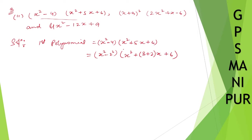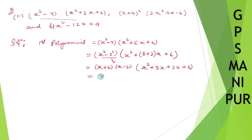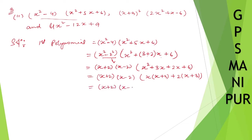If you don't know what splitting the middle term means, you can look at the previous video on that. So x squared minus 2 squared writes as (x+2)(x-2). From the trinomial we get x squared plus 3x plus 2x plus 6, then taking x common from the first two gives (x+3), and taking 2 common from the last two also gives (x+3), so the result is (x+2)(x+3). That's the first polynomial factored.